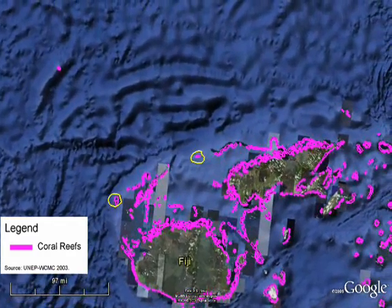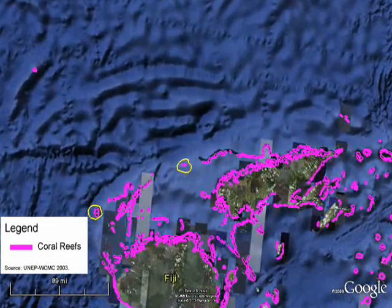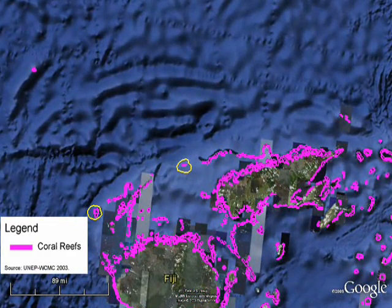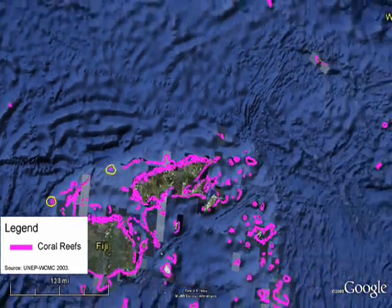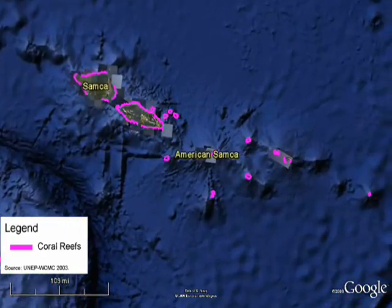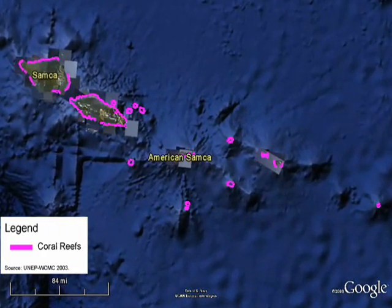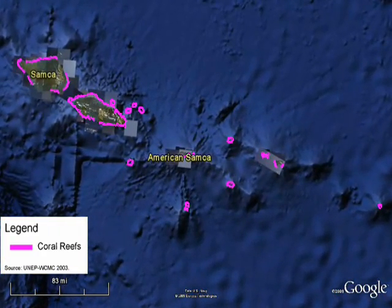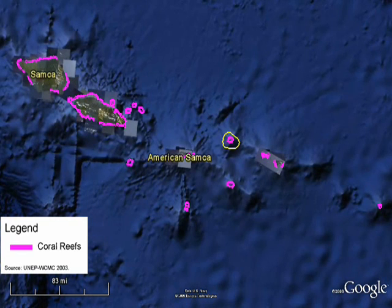If they have better data for their area, they can provide that to us, or if they simply want to provide comments on errors they might see in the map, they can digitize this on screen and provide those locations back to us via email with comments.